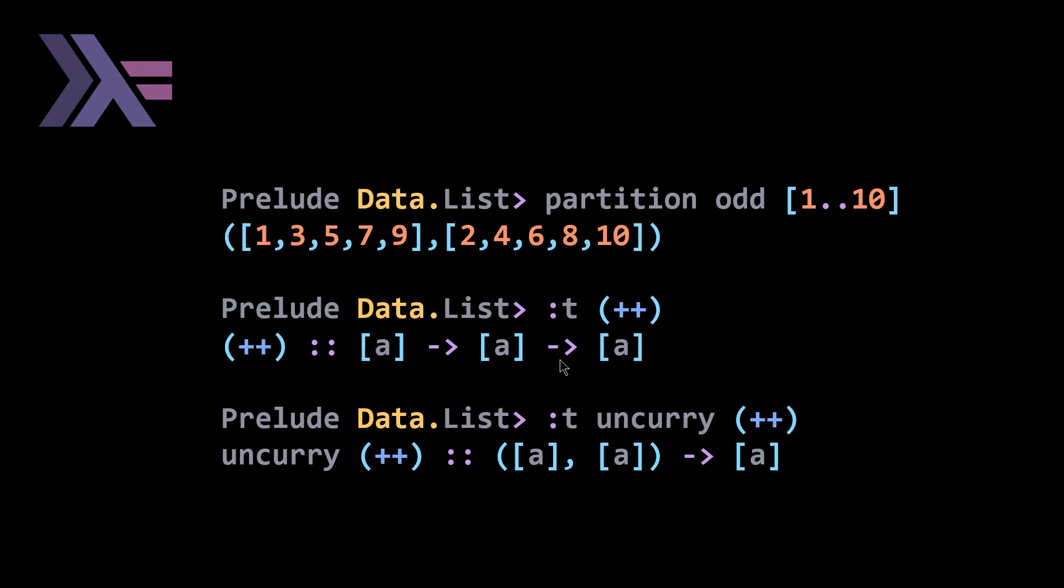we get exactly what we want, a function that takes a pair of lists of a's and then returns us a single list. So this is a motivating example that actually shows you a case where you need uncurry in order to do what I'm trying to do.